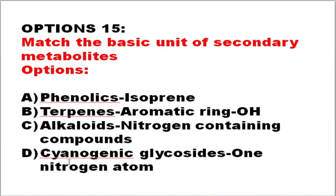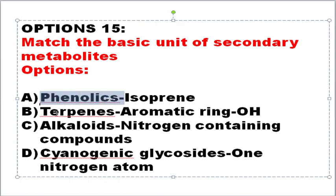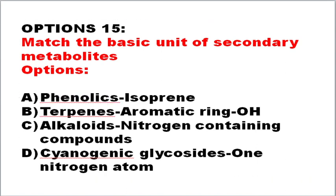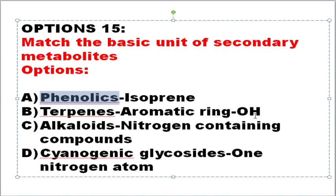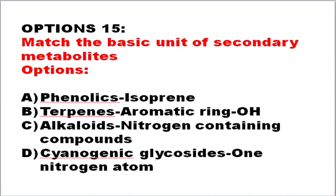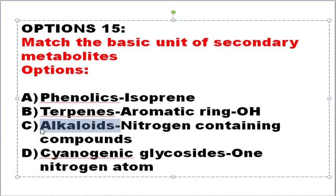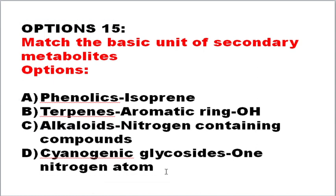Match the basic unit of secondary metabolites: phenolics, terpenes, alkaloids, and cyanogenic glycosides. The correct answer is that phenolics contain an aromatic ring with an OH group; terpenes have isoprene units and are classified based on number of isoprene units into monoterpenes, diterpenes, and sesquiterpenes; alkaloids generally have one nitrogen atom; and cyanogenic glycosides contain a nitrogen-containing compound.